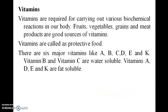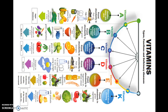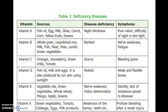Vitamins are required for carrying out various biochemical reactions in our body. Fruits, vegetables, grains, and meat products are good sources of vitamins. Vitamins are also called protective foods. There are nearly six major vitamins: Vitamin A, B, C, D, E, and K. Vitamins B and C are water-soluble; Vitamins A, D, E, and K are fat-soluble. The vitamin table in the book is presented in vertical format for better visibility.